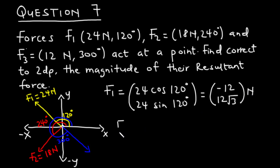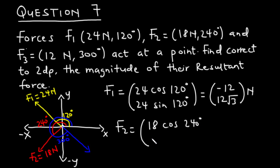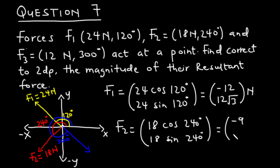For F2, which is 18 newtons at 240 degrees, we have 18 cos 240 degrees for the x-component and 18 sin 240 degrees for the y-component. 18 cos 240 is negative 9 and 18 sin 240 is negative 9 root 3.